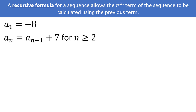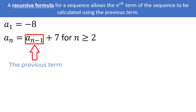This means for every number after the first number of negative 8, including the second, third, fourth number, etc., to find the next number in the list, take the previous number and add 7. The notation a with subscript (n minus 1) can be confusing, but all it is saying is take the previous number in the list. To find the next number, a sub n, you take the previous number, a sub (n minus 1), and add the common difference of 7.